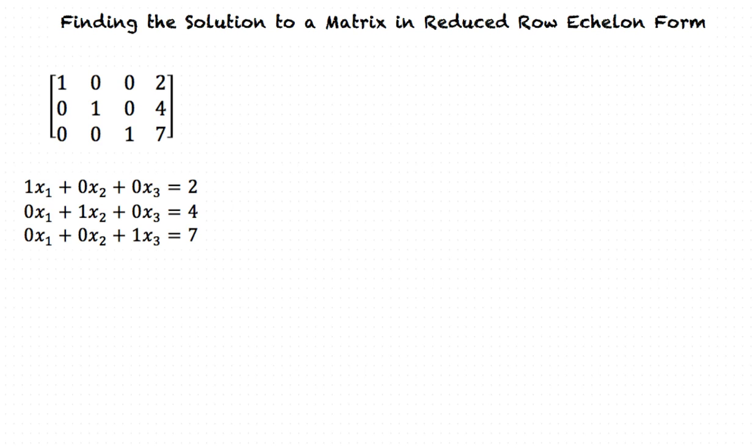And 0x1 plus 1x2 plus 0x3 is equal to 4. Along with 0x1 plus 0x2 plus 1x3 is equal to 7. We can now simplify this further to give us the solution